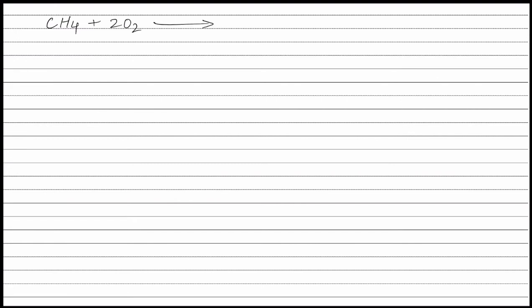The balanced equation for combustion of CH4 is CH4 + 2O2 → CO2 + 2H2O. From the balanced equation, 1 mole of CH4 reacts with 2 moles of oxygen. Therefore, 350 liters of CH4 will react with 2 × 350 = 700 liters of oxygen. Combustion of 350 liters of CH4 requires 700 liters of oxygen.